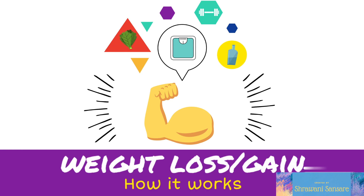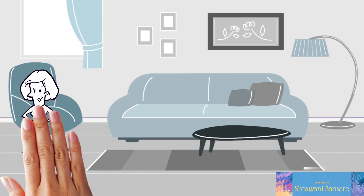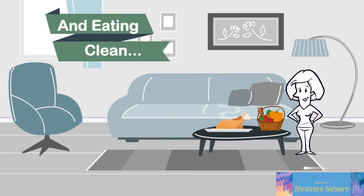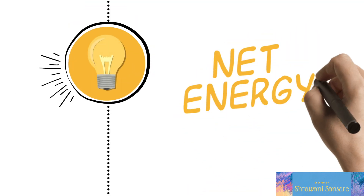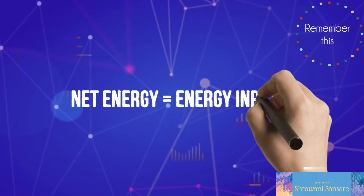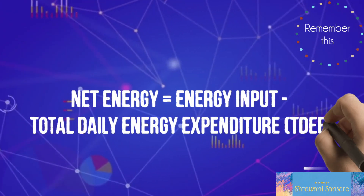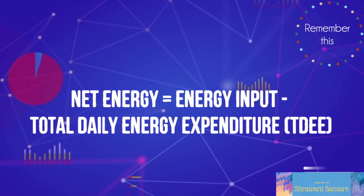Through this video I'm going to show you how weight loss and gain actually works. Do you find that you've been regularly working out and eating healthy but still aren't seeing the progress you'd like? Here's what you need to know: net energy — the energy left over at the end of your day — is what ultimately determines whether you gain or lose weight. The equation to keep in mind is: Net Energy = Energy Input − Total Daily Energy Expenditure, or TDEE.